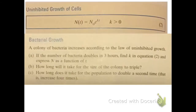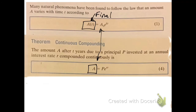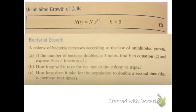Let's look at the uninhibited growth of cells. This is the second formula in the textbook, and notice that we have a positive k value. The notation switches slightly — instead of a₀ we use N₀ for our original amount, and N(t) for our final amount after a certain time period.